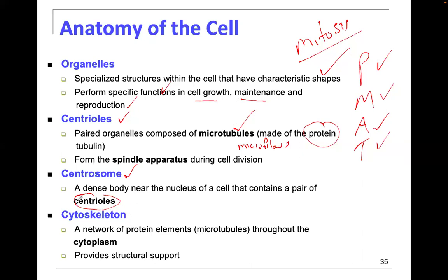The cytoskeleton — 'cyto' meaning cell and 'skeleton' — is just a bunch of protein elements like microtubules scattered throughout the cytoplasm. They provide structural support.